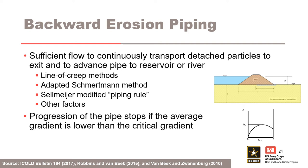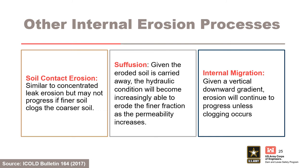Backward erosion piping is the only internal erosion process where the hydraulic condition for progression is evaluated using three methods discussed during this training. Progression of the pipe stops if the average gradient is lower than the critical gradient. The hydraulic condition for progression of soil contact erosion is similar to concentrated leak erosion, but erosion may not progress if the finer soil clogs the coarser soil. For suffusion, given that the eroded soil is carried away, the hydraulic condition will become increasingly able to erode the finer fraction as permeability increases. For internal migration, given a vertical downward gradient, erosion will continue to progress unless clogging occurs.